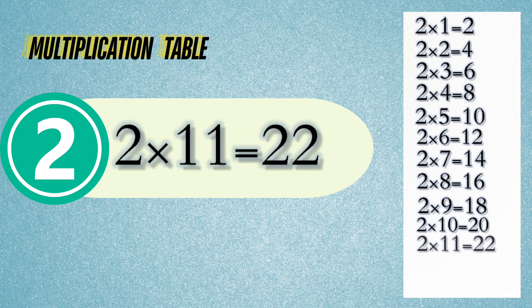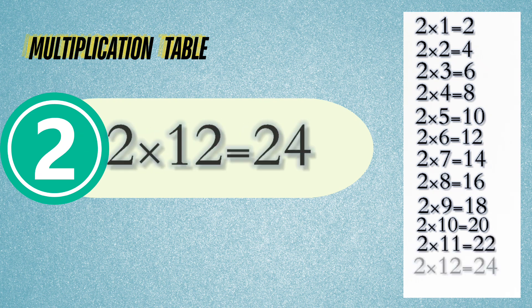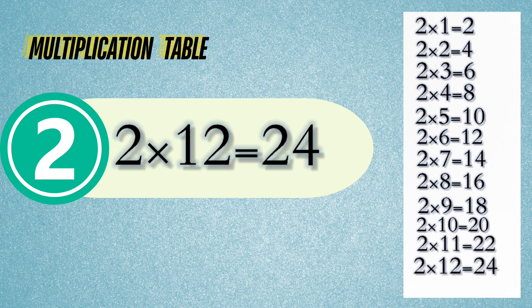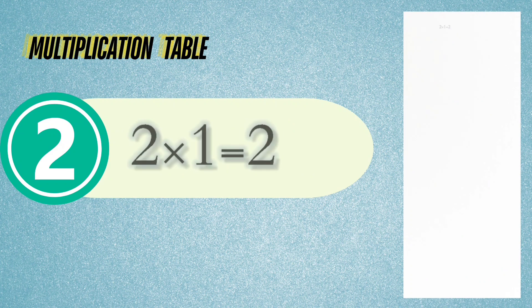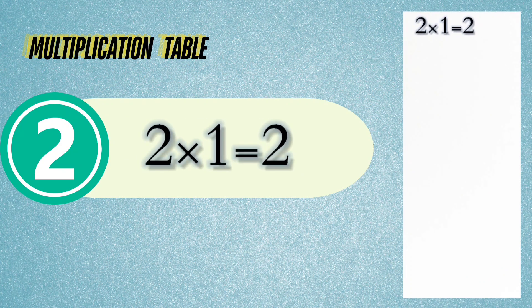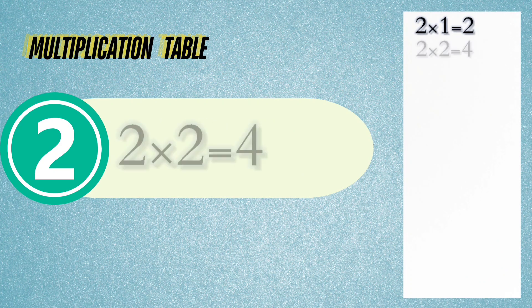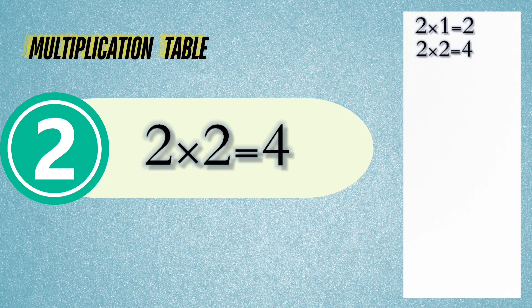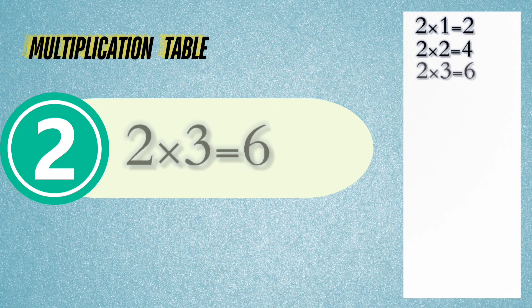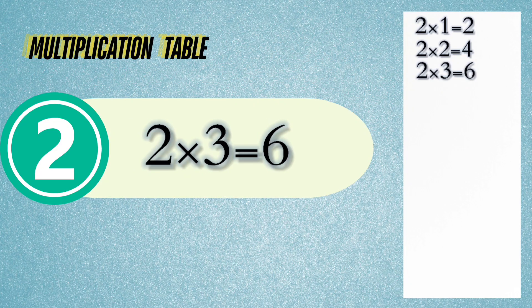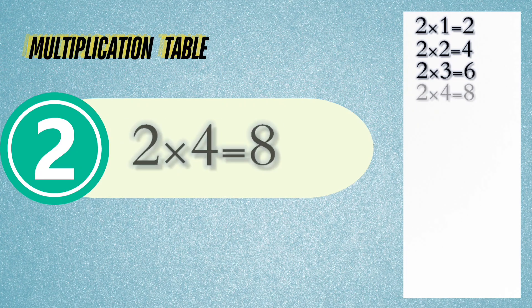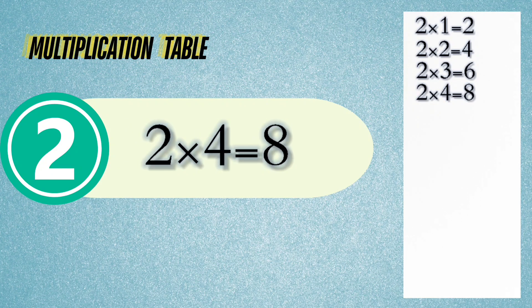Two times eleven is twenty-four. Two times one is two. Two times two is four. Two times three is six. Two times four is eight.